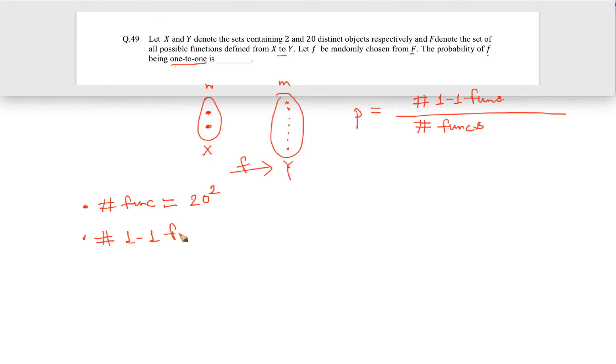What about total number of one-to-one functions? Total number of one-to-one functions is basically that out of these 20 you have to choose any two, so let's say you have chosen this and you have chosen this. Any two you have to choose and then after that you have to map them.